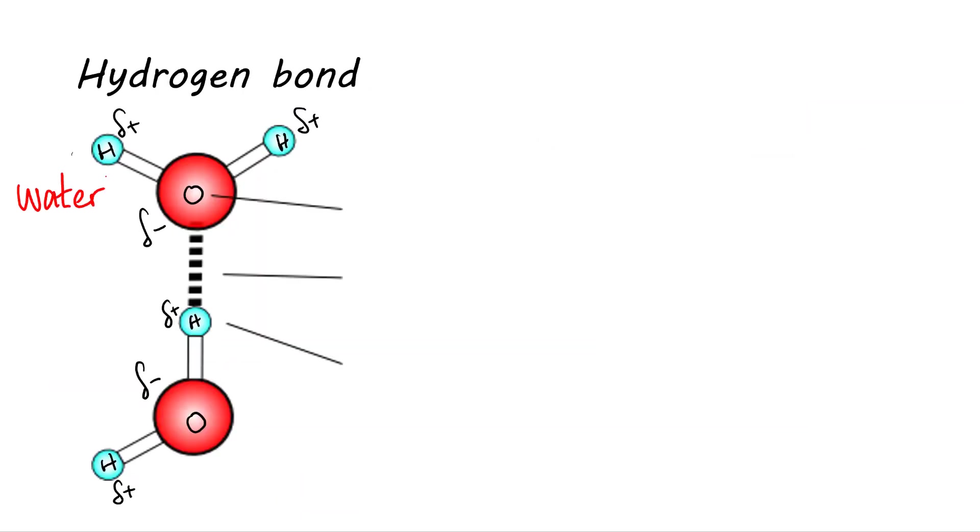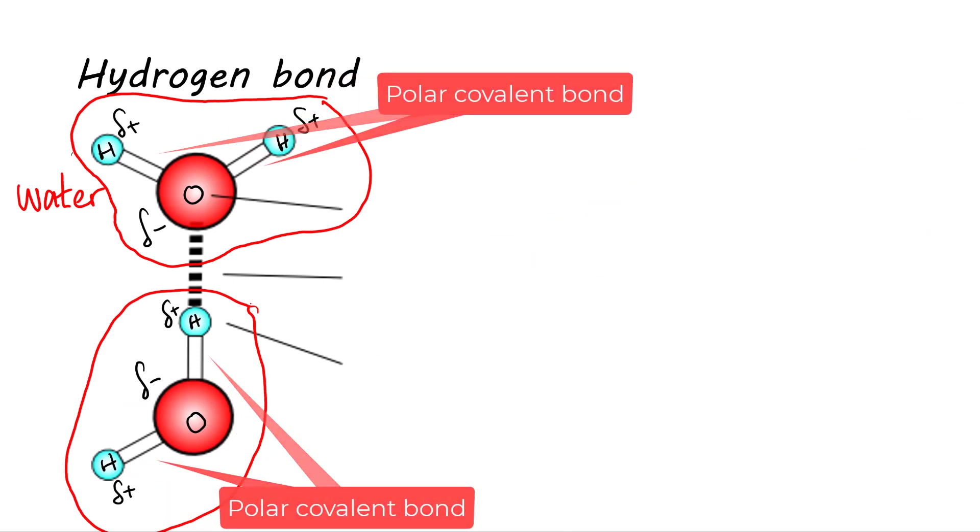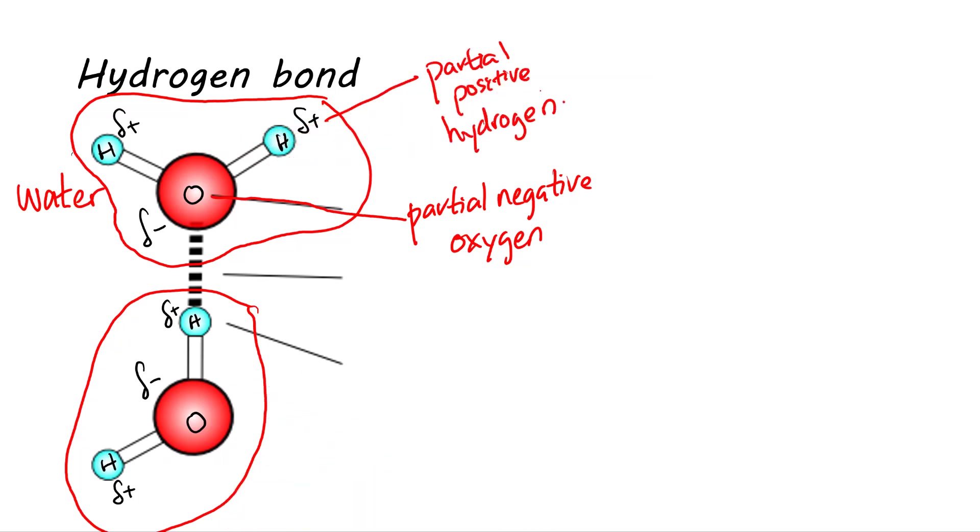For instance, water molecule, due to the polar covalent bonds attracting the electrons to the electronegative oxygen, the overall water molecule has a partial negative charge at its oxygen end, and a partial positive charge at the hydrogen end.